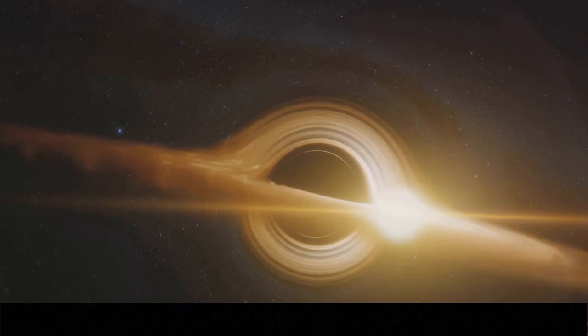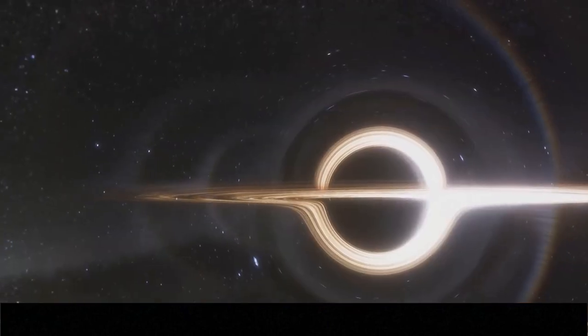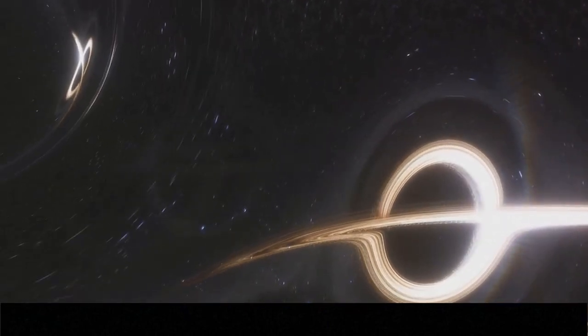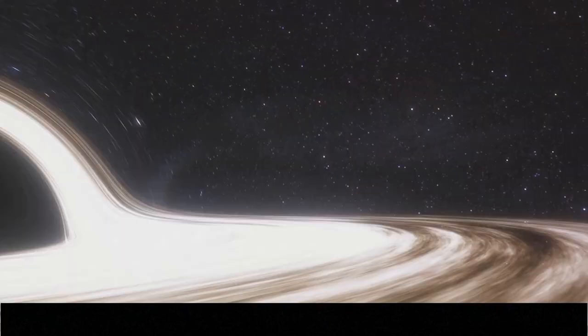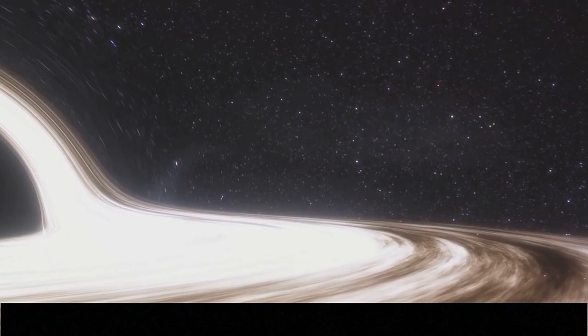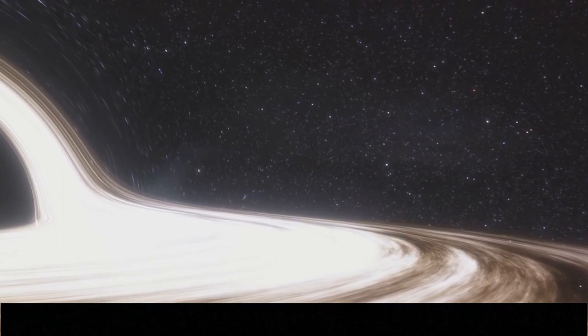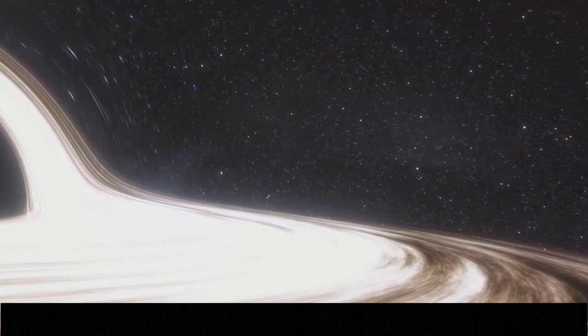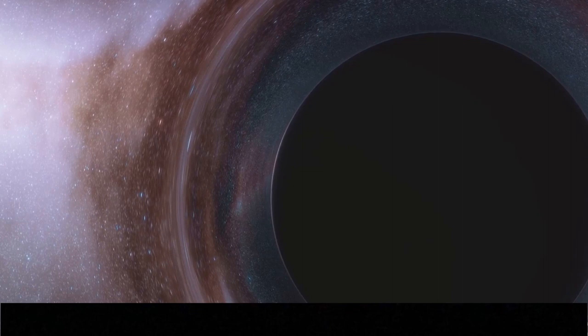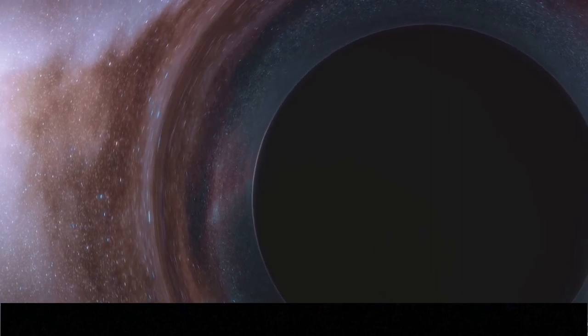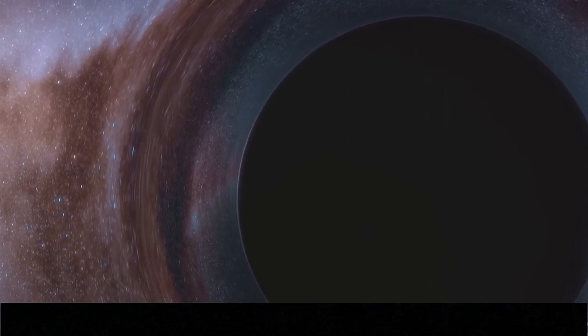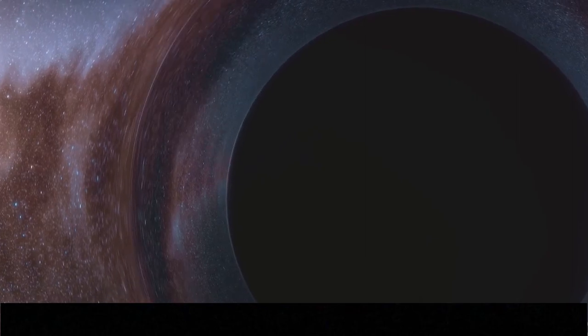General relativity, developed ten years later, incorporates gravity into this picture. It describes the physics of the very massive, such as stars and galaxies. According to general relativity, massive objects cause space-time to curve, and it's this curvature that we perceive as gravity. So, in the world of relativity, time can dilate, space can contract, and gravity is the result of space-time's curvature.